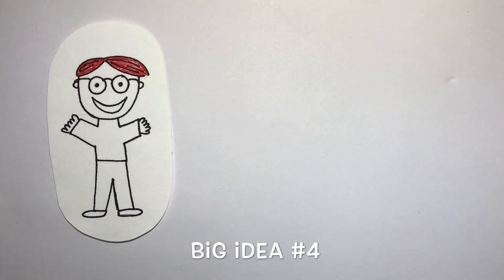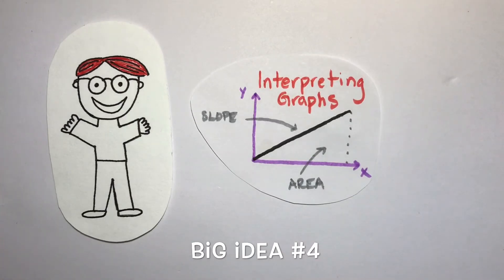Big idea number four is all about interpreting graphs. A lot of different ideas will involve some graphical information, and when we look at this graph there's two pieces we need to always consider. The slope of the line will often give us a variable or quantity that we need. For example, in a velocity time graph, the slope of the line is your acceleration.